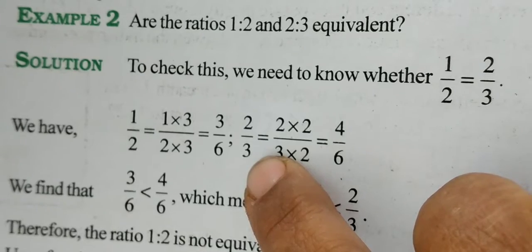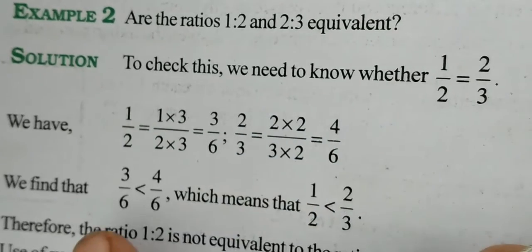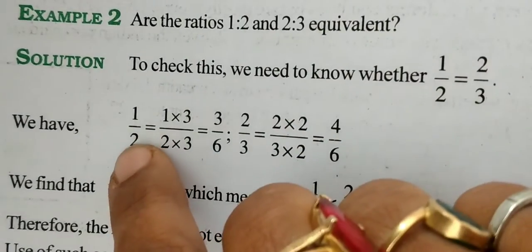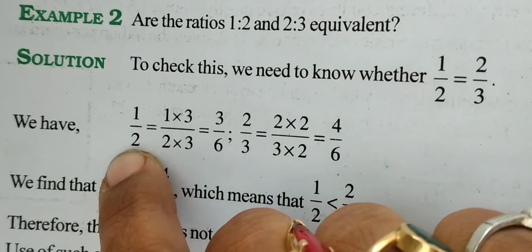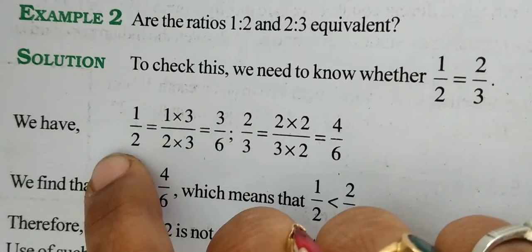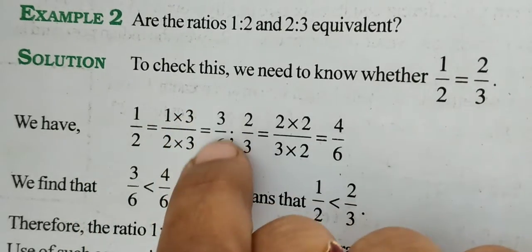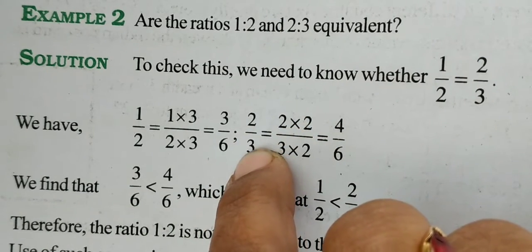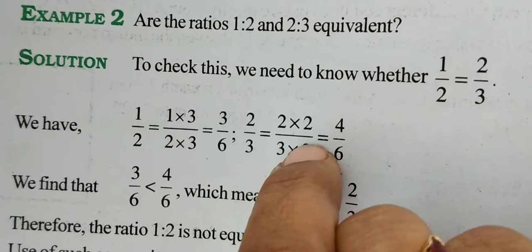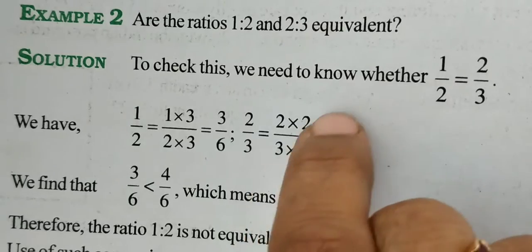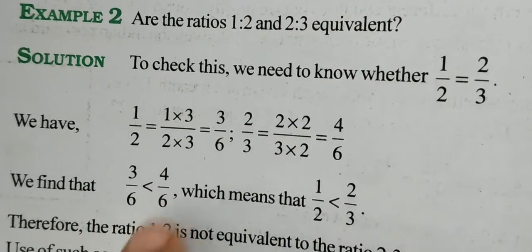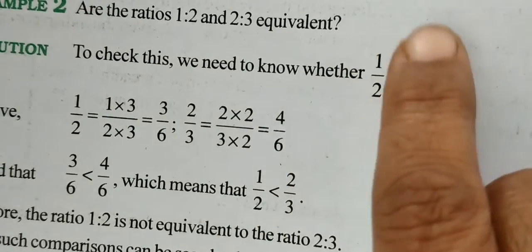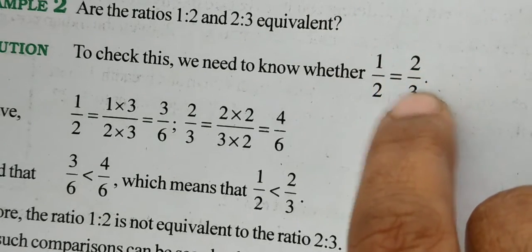What is the common denominator? We can find the LCM of 2 and 3, which is 6. To convert 1 upon 2, multiply by 3 to get 6 in the denominator. 3 times 1 is 3, and 3 times 2 is 6, so you have 3 upon 6. Same procedure for 2 upon 3: multiply by 2. 2 times 2 is 4, and 2 times 3 is 6, so 4 by 6. We find that 3 by 6 is smaller than 4 by 6. That means 1 upon 2 is less than 2 by 3.